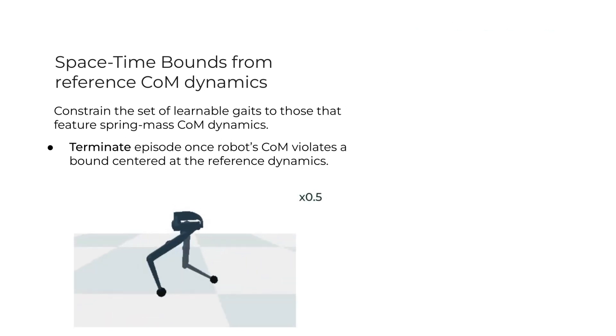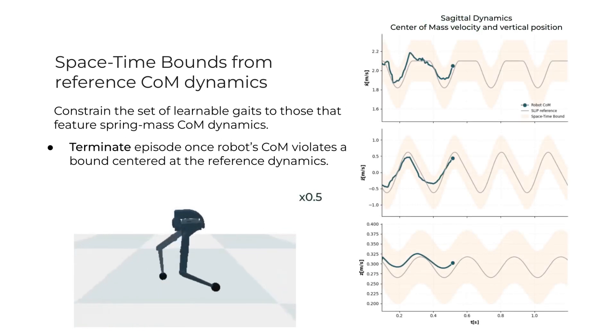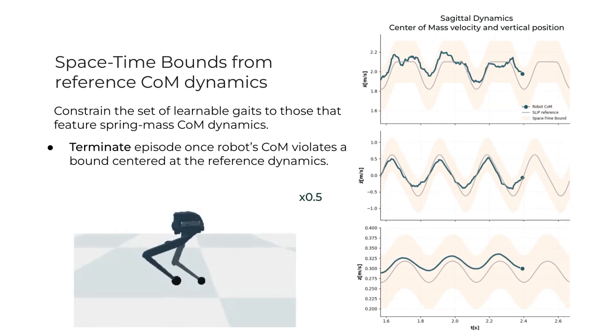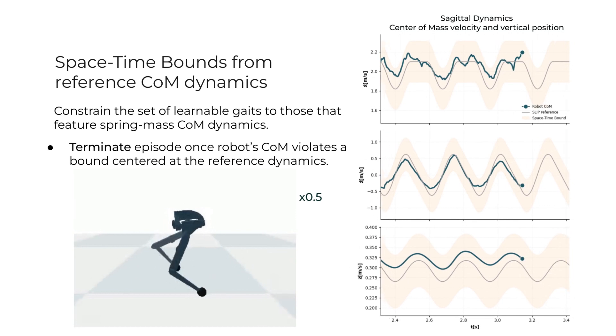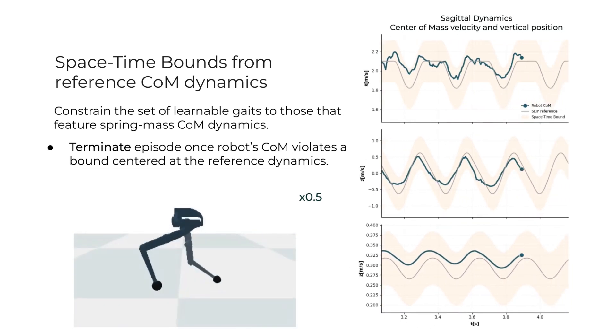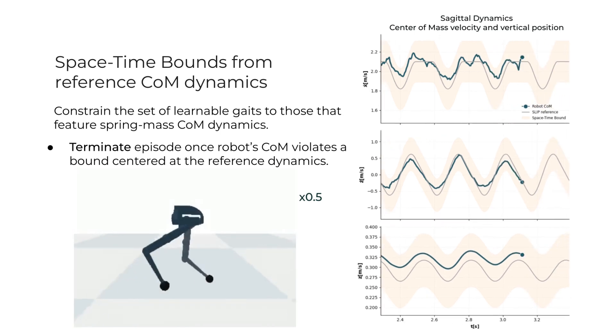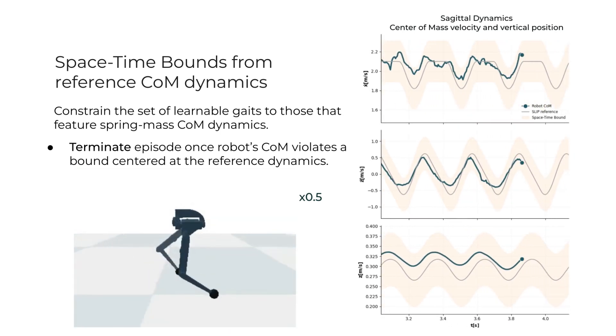During learning, we use these approximate reference dynamics to constrain the exploration space of the policy with a space-time bound, terminating an episode once the robot center of mass and the reference center of mass deviate considerably. This effectively constrains the set of feasible locomotion gaits to feature natural spring-mass dynamics.